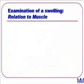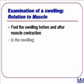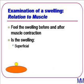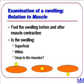In order to assess the relationship of the lump to muscle, we need to get the patient to contract the regional muscles while palpating the swelling. We need to decide if the swelling is superficial to muscle — in which case it is still clearly palpable upon muscle contraction — whether it is within the muscle, in which case it is not quite as palpable, or deep to muscle, when we would not be able to palpate it at all after muscular contraction.